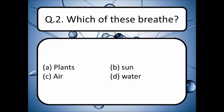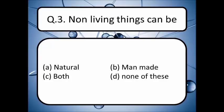Next question: which of these breathe? Option A is plants, B is sun, C is air, D is water. Pick your correct answer and write it down in the comment box. The correct answer is option A. Non-living things can be natural, man-made, both, or none of these — and the correct answer is option C, both.